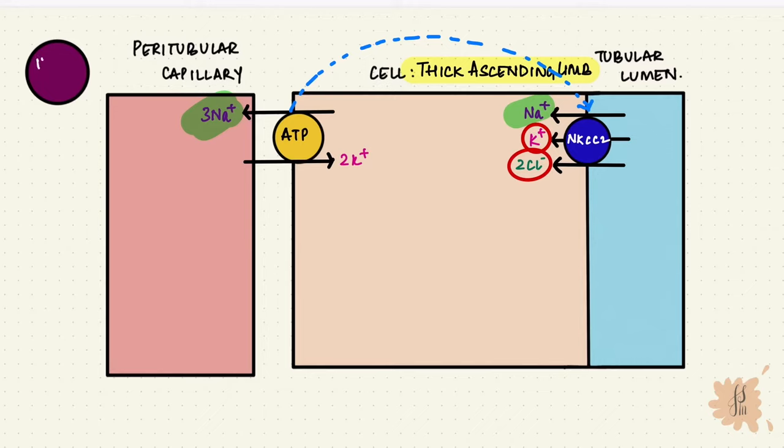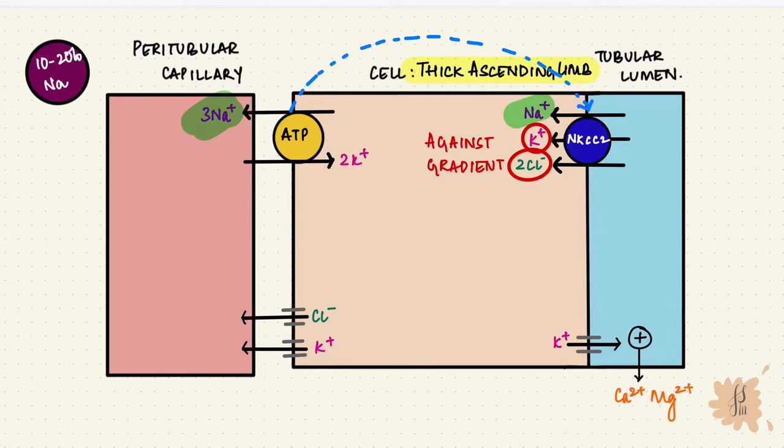10 to 20 percent of sodium is reabsorbed here, versus 65 percent in the PCT. So potassium and chloride are entering the cell against a concentration gradient, so they passively exit the cell along the concentration gradient from high to low. A slight back leak of potassium creates enough positive potential in the tubular lumen to transport other positive ions like magnesium and calcium paracellularly, which means between the cells, into the interstitium.